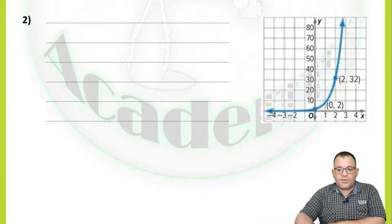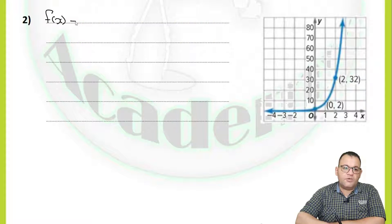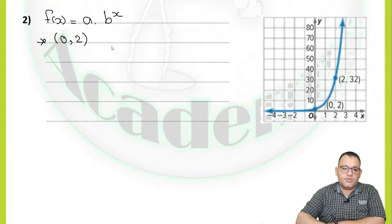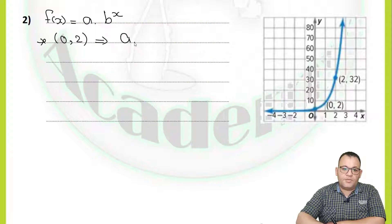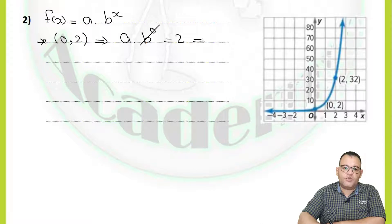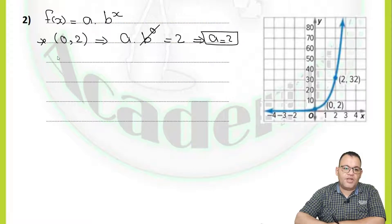In this problem, we need to write the function which is represented by this graph. I will start with f(x) equals a multiplied by b to the power x. We'll use the first point which contains 0 for x: (0, 2). So x equals 0 and y equals 2, giving us a multiplied by b to the power 0 equals 2. Since b to the power 0 equals 1, we can say a equals 2. Now rewrite the function: f(x) equals 2 multiplied by b to the power x.